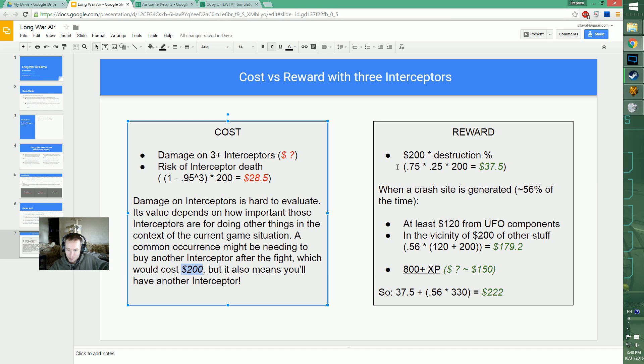But the reward is huge. I simmed with destruction percents and I'm saying we're going to destroy about 25% of the time, even though ideally we might get that down to 20%. That gives us $37.50 expectation from destructions. Then we also have UFO components, alloys, Elerium, floaters, and stuff when we generate a crash site, which was 56% of the time.